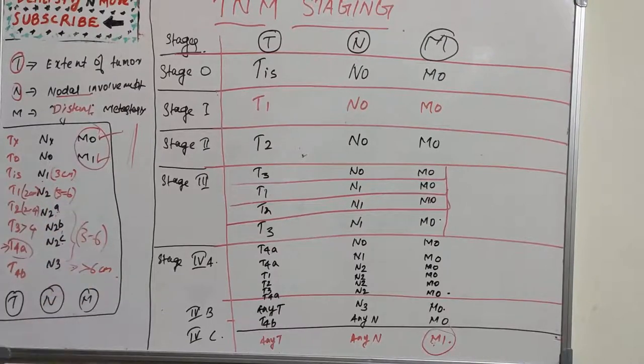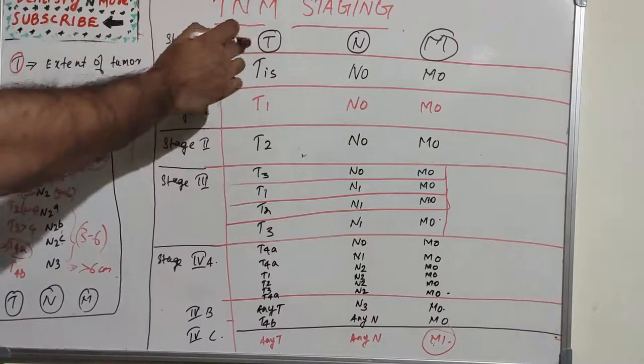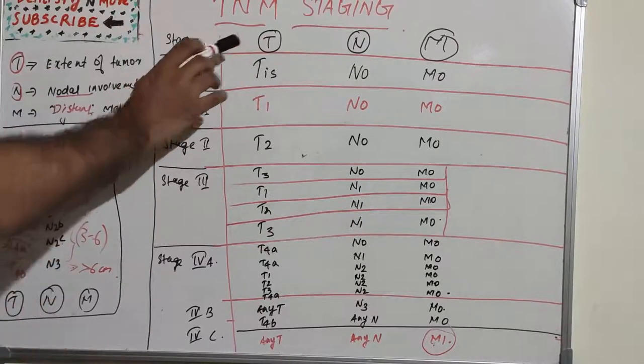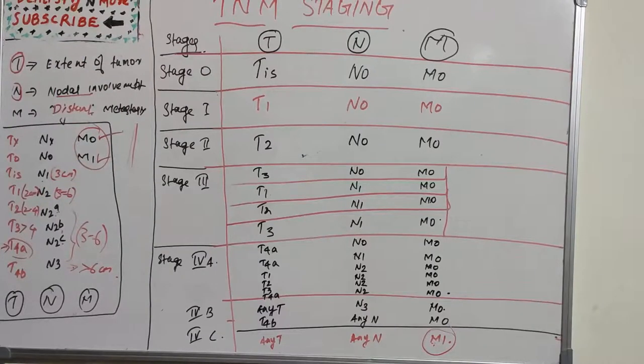There are lots of limitations to TNM staging, especially T staging. It is a crude system, and tumor size is not consistently related to prognosis. The boundaries are debatable, and it can be difficult to accurately assess clinical extent. There are inconsistencies and omissions.